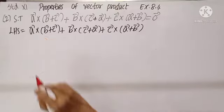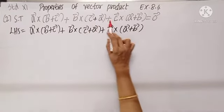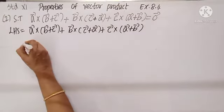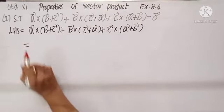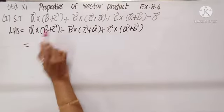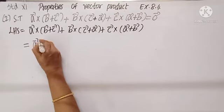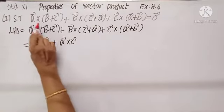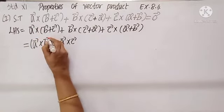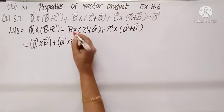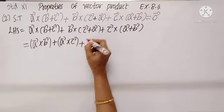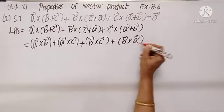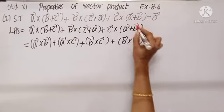Question 2: Show that A cross (B+C) + B cross (C+A) + C cross (A+B) equals 0. Starting from the left-hand side and applying the distributive law: A cross (B+C) = A cross B + A cross C; B cross (C+A) = B cross C + B cross A; and C cross (A+B) = C cross A + C cross B.